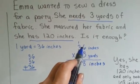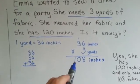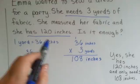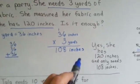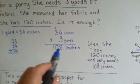Or we could multiply the 36 inches times the three yards and get 108 inches. If she has 120 inches, then yes, she has enough. She only needed 108.